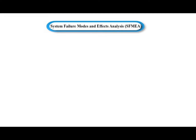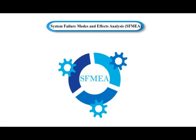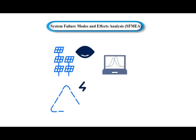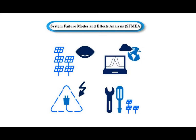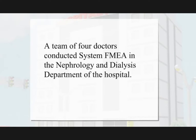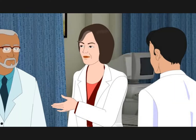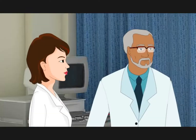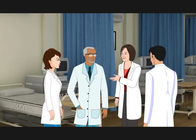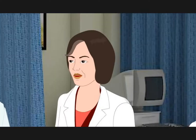System Failure Mode and Effects Analysis is mainly used to analyze a complete system and/or subsystems during the concept or design stage. This is the highest level analysis of an entire system which is made up of various subsystems. A team of four doctors conducted system FMEA in the nephrology and dialysis department of the hospital to identify potential failure modes, effects, and causes that may prevent a system from achieving all of its system objectives.